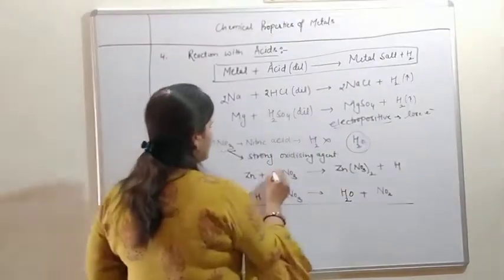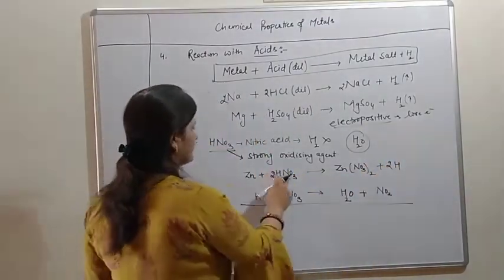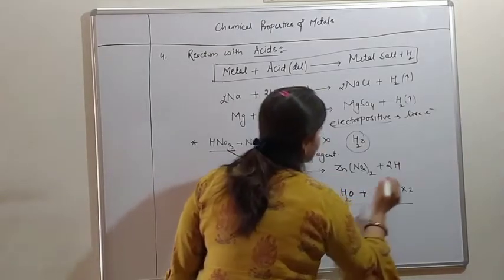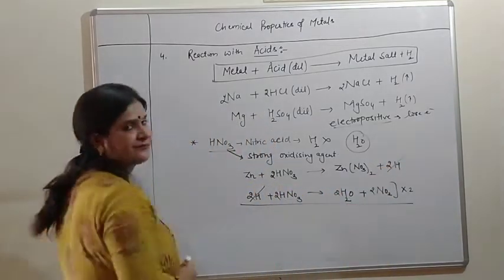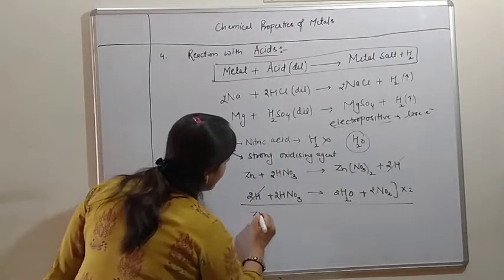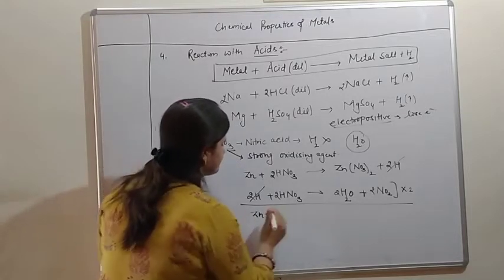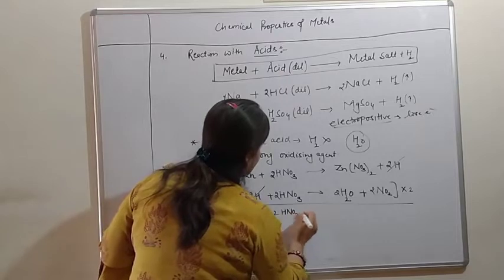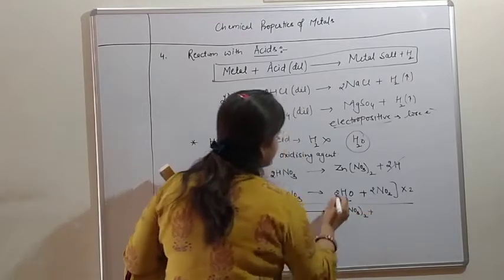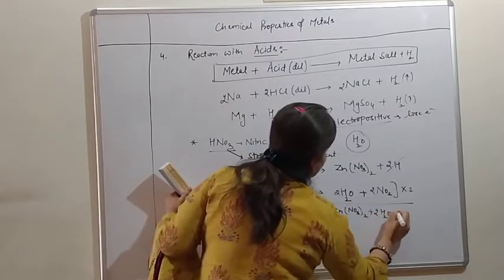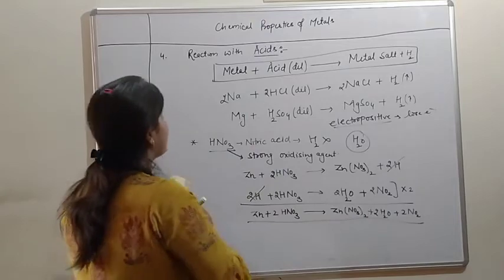We will balance the reaction. We multiply the whole reaction by 2. It will cancel out. What we get? Zinc - overall reaction is zinc with nitric acid.